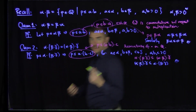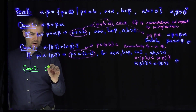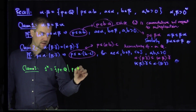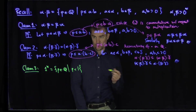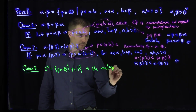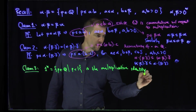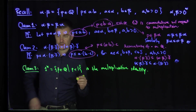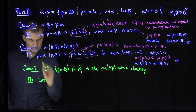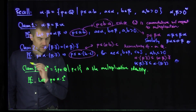The final claim we'll do is the identity claim. We claim — claim three — that 1*, which is the set of all p in ℚ such that p is less than the rational number one, is the multiplicative identity in ℚ. We already know it's a cut. Let's prove it's a multiplicative identity. So here's the proof of claim three.